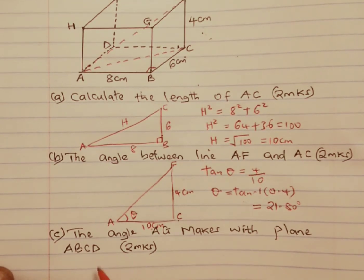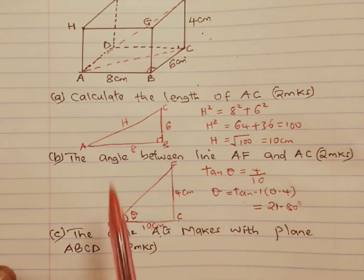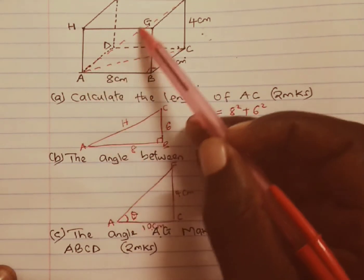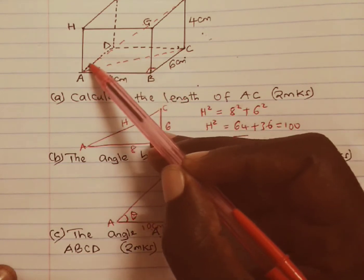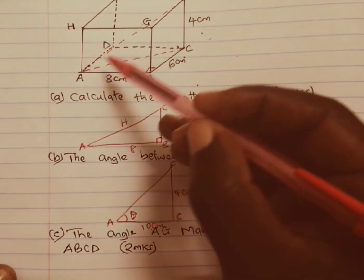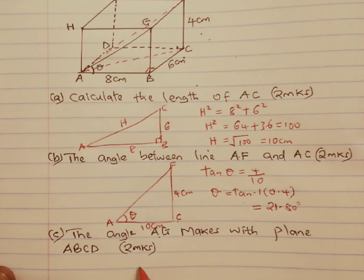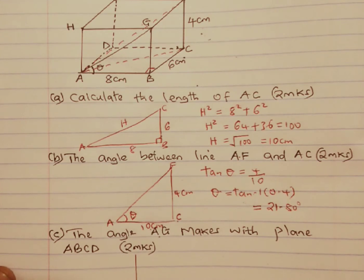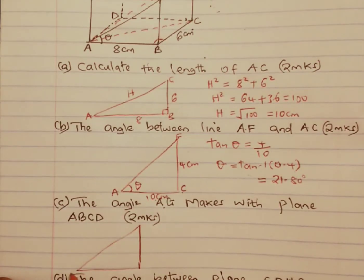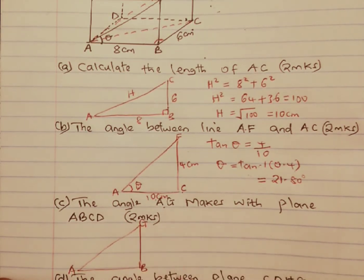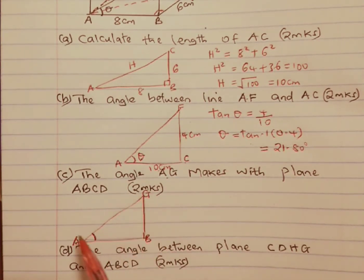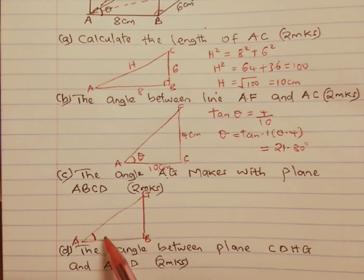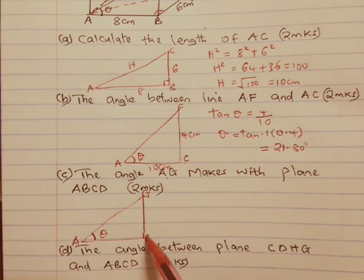Next we have part C: the angle that AG makes with the plane ABCD. We need to look at the line of intersection between AG and the plane. We can extract this triangle with points A, B and G. The angle AG makes with the plane ABCD — the line of intersection becomes AB. We know BG is 4 cm and AB is 8 cm.